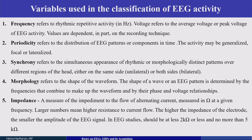There are several variables used to classify EEG activity. Frequency refers to the rhythmic repetitive activity of the EEG — it can be rhythmic, with a constantly changing stable frequency, or arrhythmic, where no stable rhythms are present and the signal appears scattered.